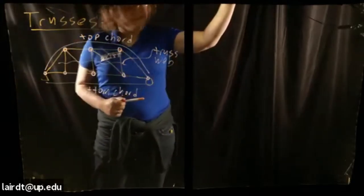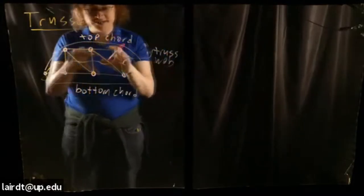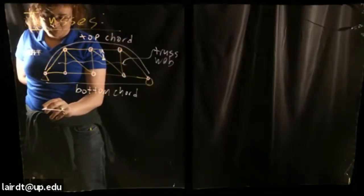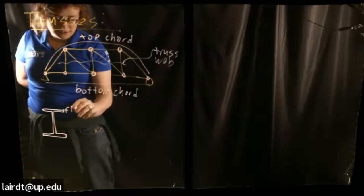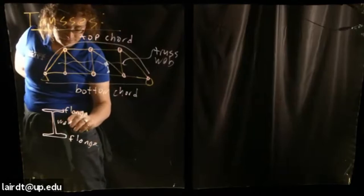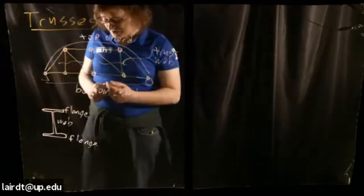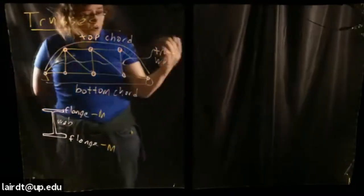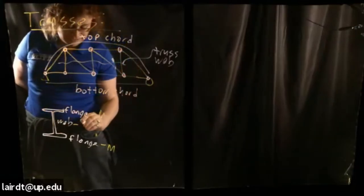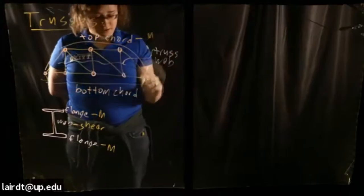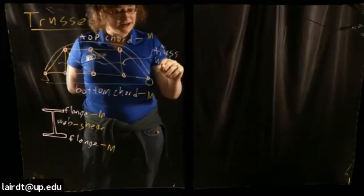Hopefully you can start to draw some parallels between what we've talked about previously with beam design. If you think about something like a W section or an I-shaped section, you have your flange and your web. The flange is optimized for moment — it essentially carries your flexural stresses. Your web carries your beam shear. This is really no different in terms of trusses: the top and bottom chord tend to carry moment, and the web tends to carry the shear of the truss.